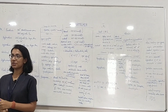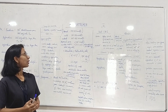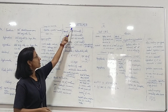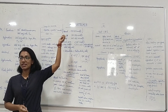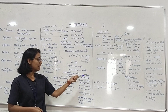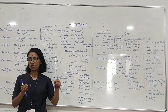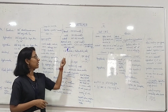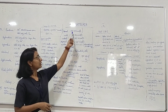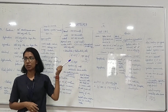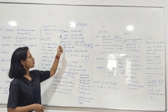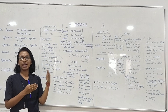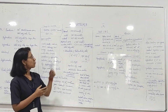Good afternoon everyone. Today I am going to talk about hyponatremia. Hyponatremia is when the blood sodium level drops below normal. The normal blood sodium level ranges between 135 to 145 millimole per litre. When we study hyponatremia, there are ranges: mild, moderate, and severe.